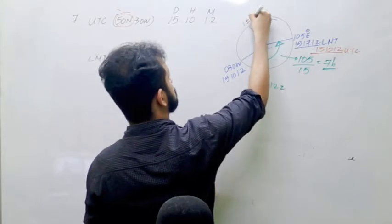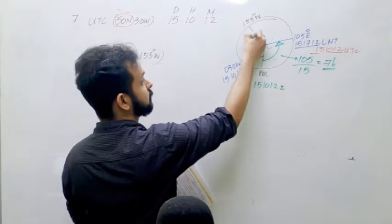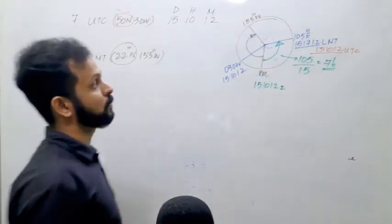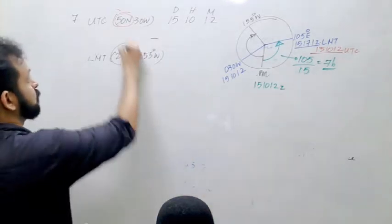155 degrees west is somewhere here. Again you transfer it to the UTC and then you measure it like this. Now unlike in the previous case you are measuring westward. So whatever after time you have, you have to subtract it. So what is the after time?